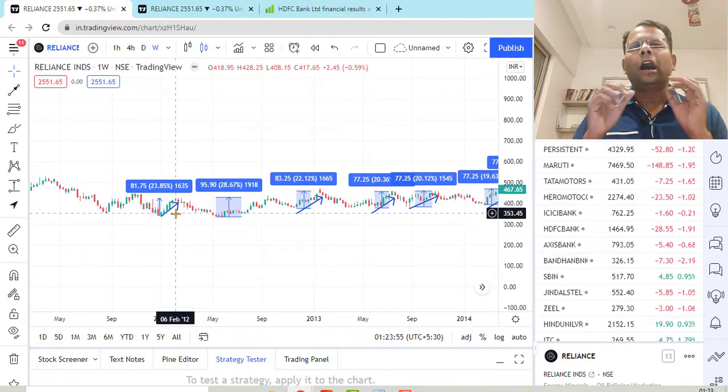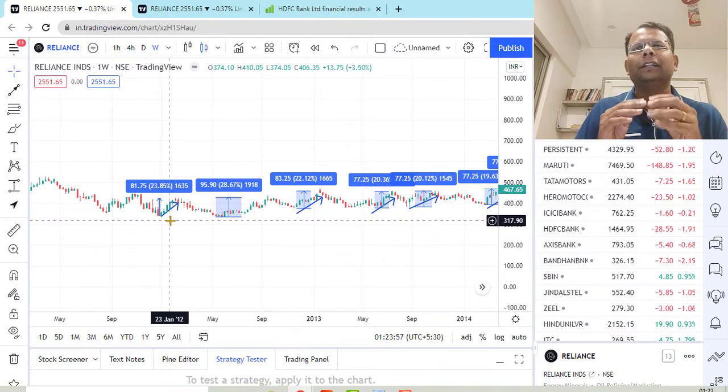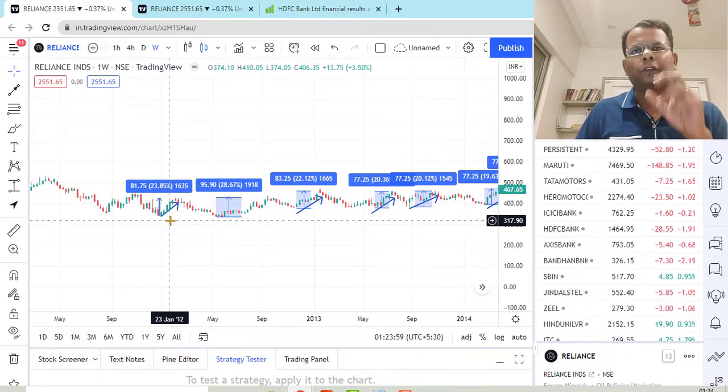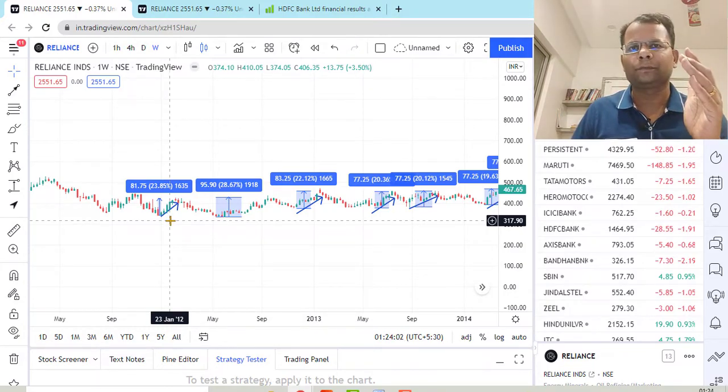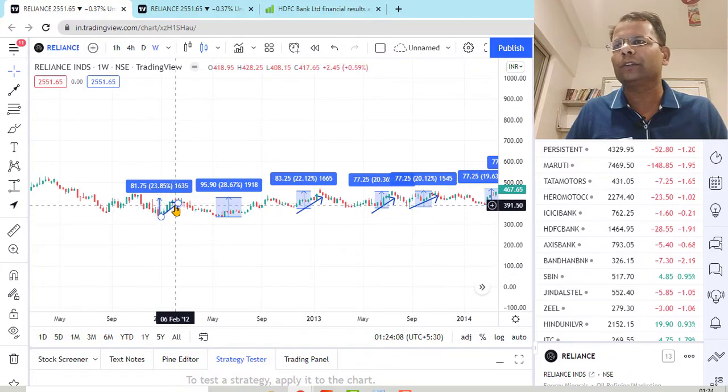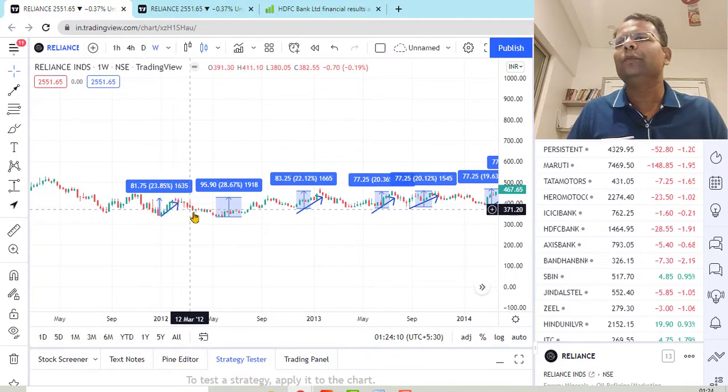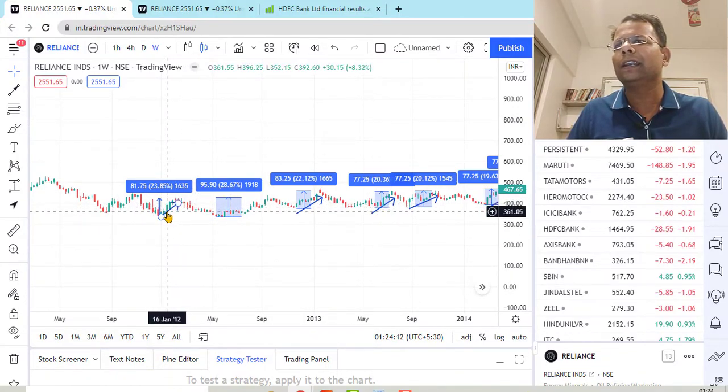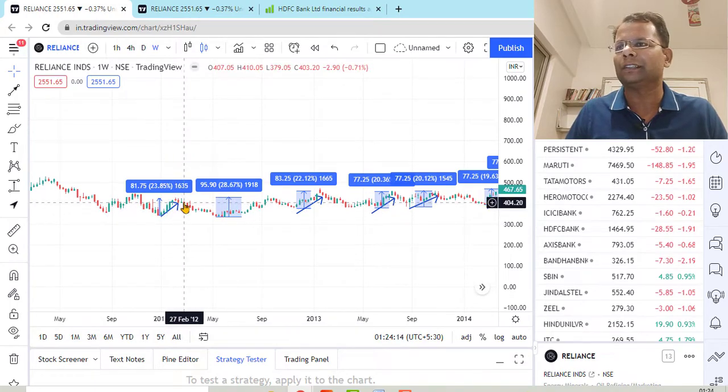Reliance has given approximately 20 percent CAGR for an investor when he just buys and holds the stock for the last 10 years. Now we will see this is the chart of Reliance, and in the last 10 years, how many times did it happen that Reliance gave a move of approximately 20 percent or more? We are going to find out. These are the arrows which I have marked on the chart.